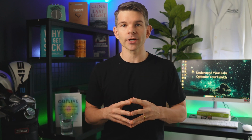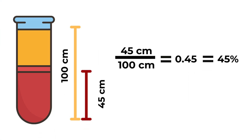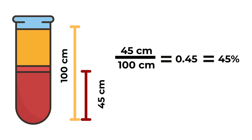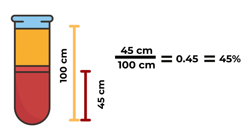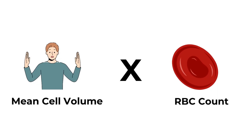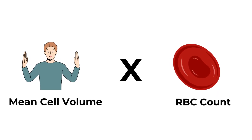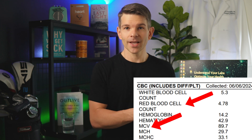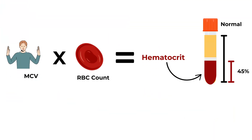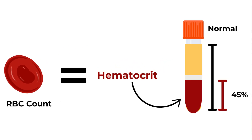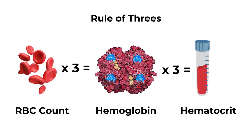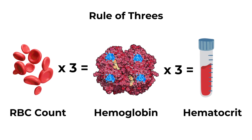Hematocrit can be conceptually measured in three ways. The first is by measuring how high the packed red blood cells are in the tube and dividing that by the total height of the blood. The second is by multiplying mean corpuscular volume — the average size of each red blood cell — times the red blood cell count; both of these numbers are on the CBC. Average cell size times the number of cells gives an estimate of how much space those cells occupy, which is hematocrit. The third is the rule of threes: red blood cell count times three equals hemoglobin, and hemoglobin times three equals hematocrit.